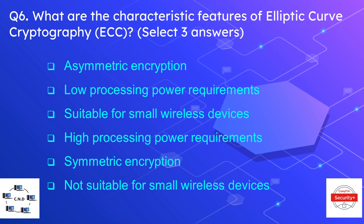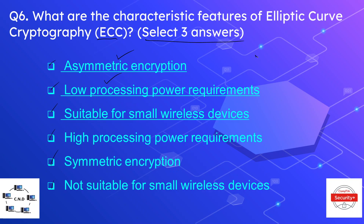Question number six: what are the characteristic features of elliptic curve cryptography or ECC? Select three answers. The options are asymmetric encryption, low processing power requirements, suitable for small wireless devices, higher processing power requirements, symmetric encryption, and not suitable for small wireless devices. The correct options are: ECC is an asymmetric algorithm, it has low processing power requirements, and it is suitable for small wireless devices.